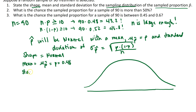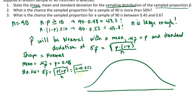The standard deviation, sigma of p-hat, is equal to the square root of p times 1 minus p over n. This is equal to the square root of 0.48 times 0.52 divided by 90. This comes out to be equal to 0.053. So our mean is equal to 0.48, our standard deviation is equal to 0.053, and we have a normal distribution.